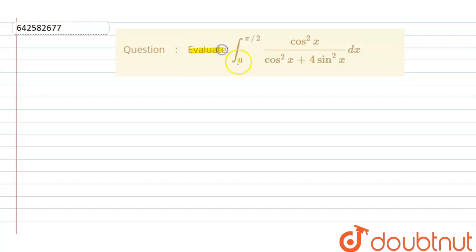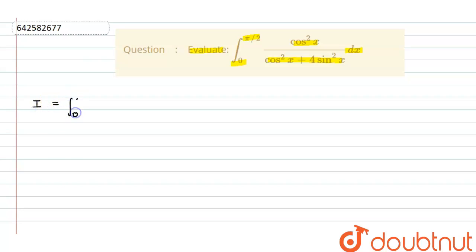The question is: evaluate the limit from 0 to π/2 of cos²x / (cos²x + 4sin²x) dx.